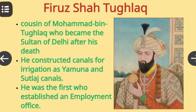Muhammad bin Tughlaq was succeeded by his cousin, Feroz Shah Tughlaq. Feroz Shah Tughlaq's 37-year reign is largely remembered for numerous welfare schemes. He constructed new canals for irrigation, like the Yamuna and Satlaj canals. Hundreds of wells were dug and many dams were constructed. He was the first ruler to establish an employment office.